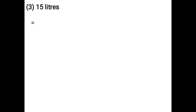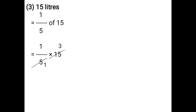15 liters. That is equal to 1 upon 5 of 15, that is equal to 1 upon 5 into 15. Using the cancellation method: 5 ones are 5, 5 threes are 15, 1 three is 3. That is equal to 3 liters.